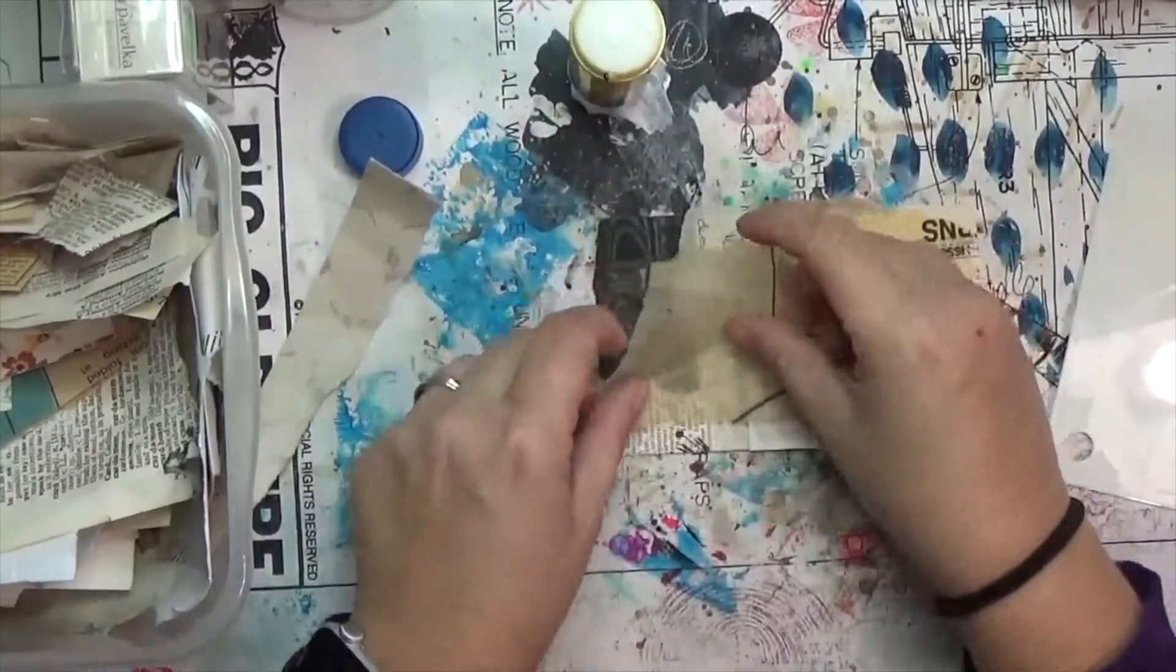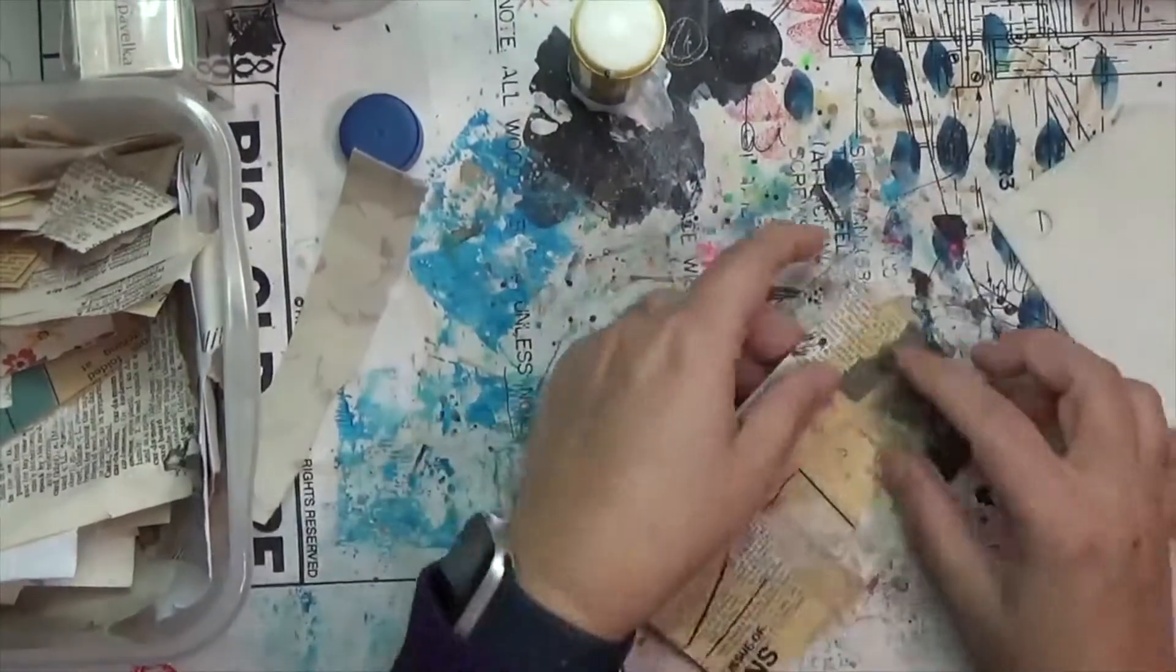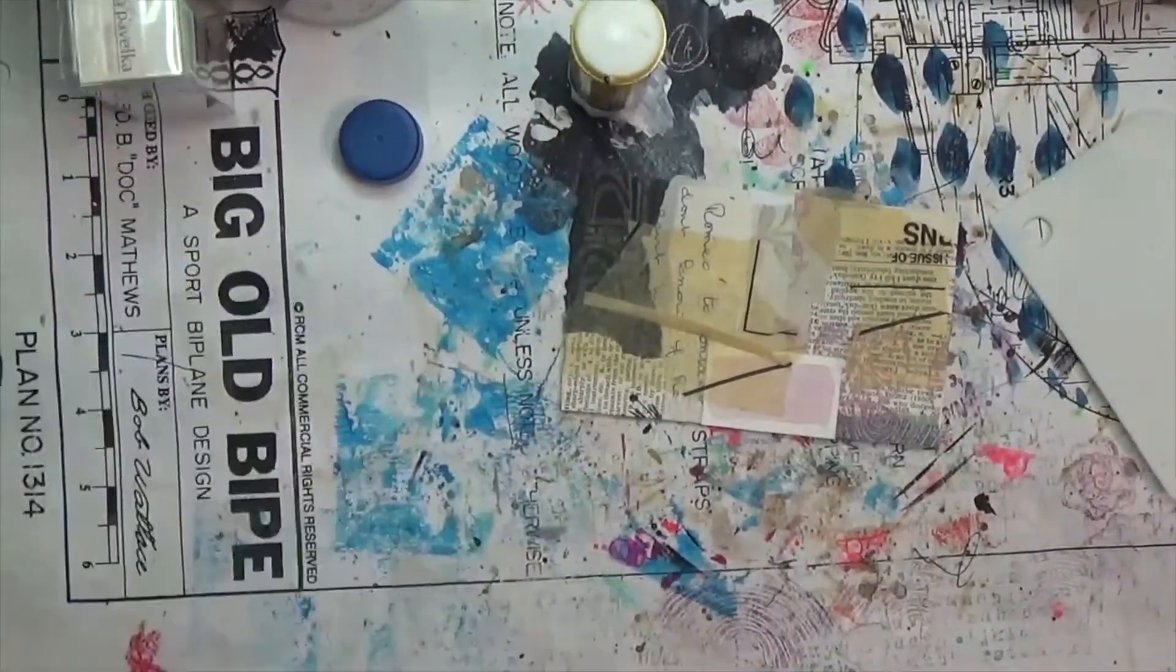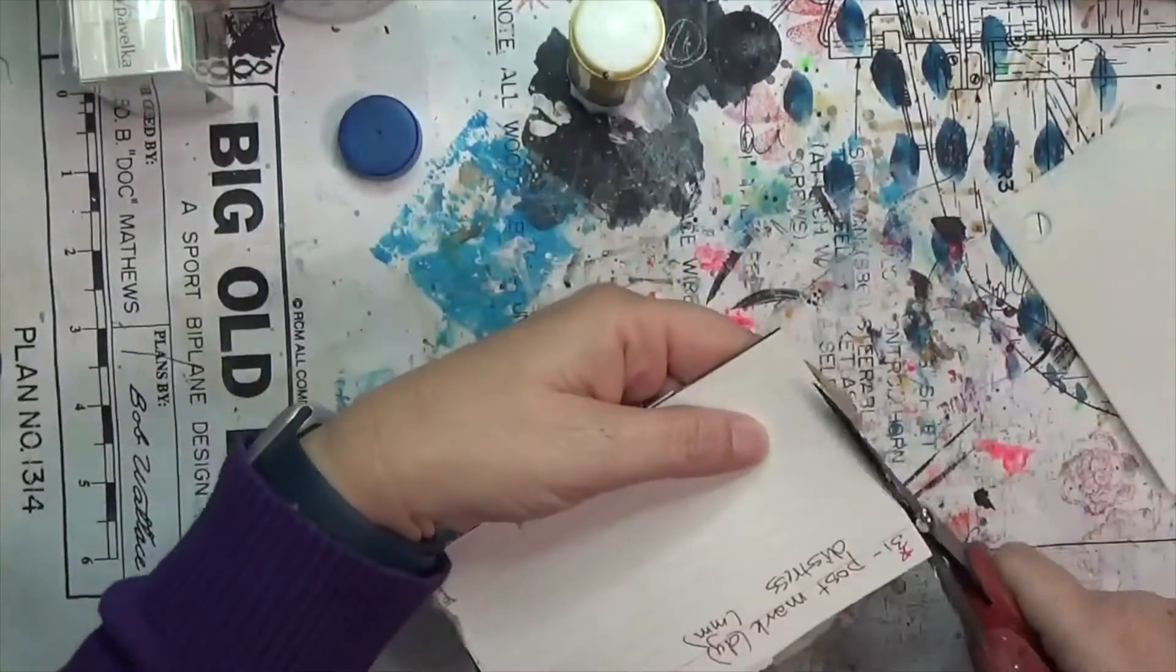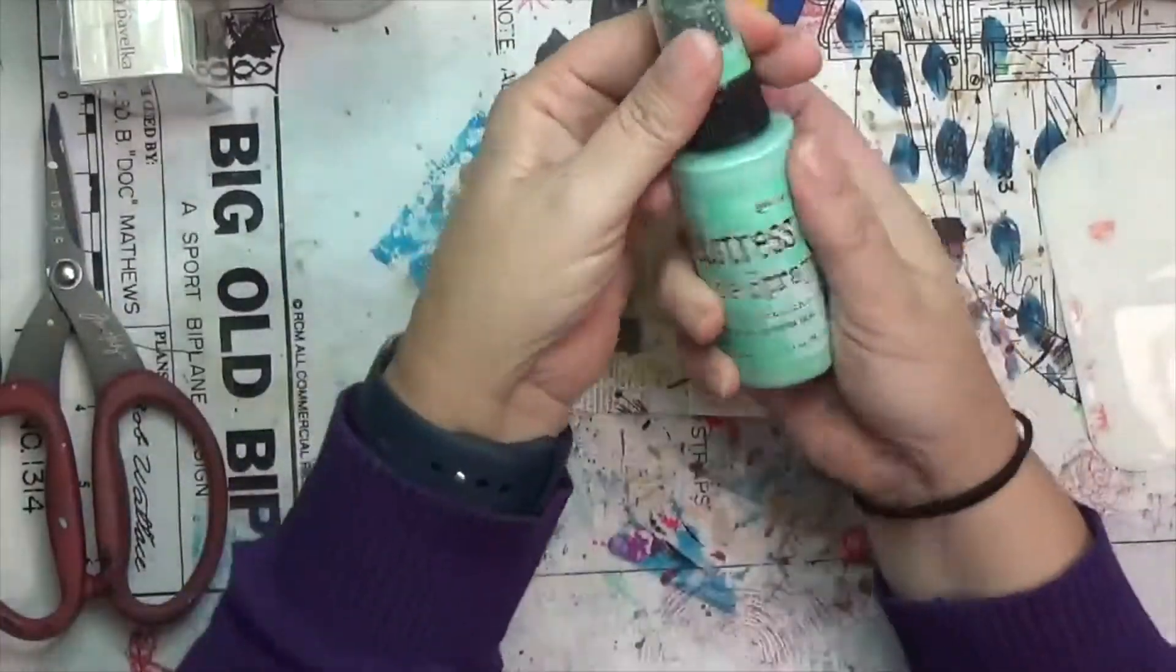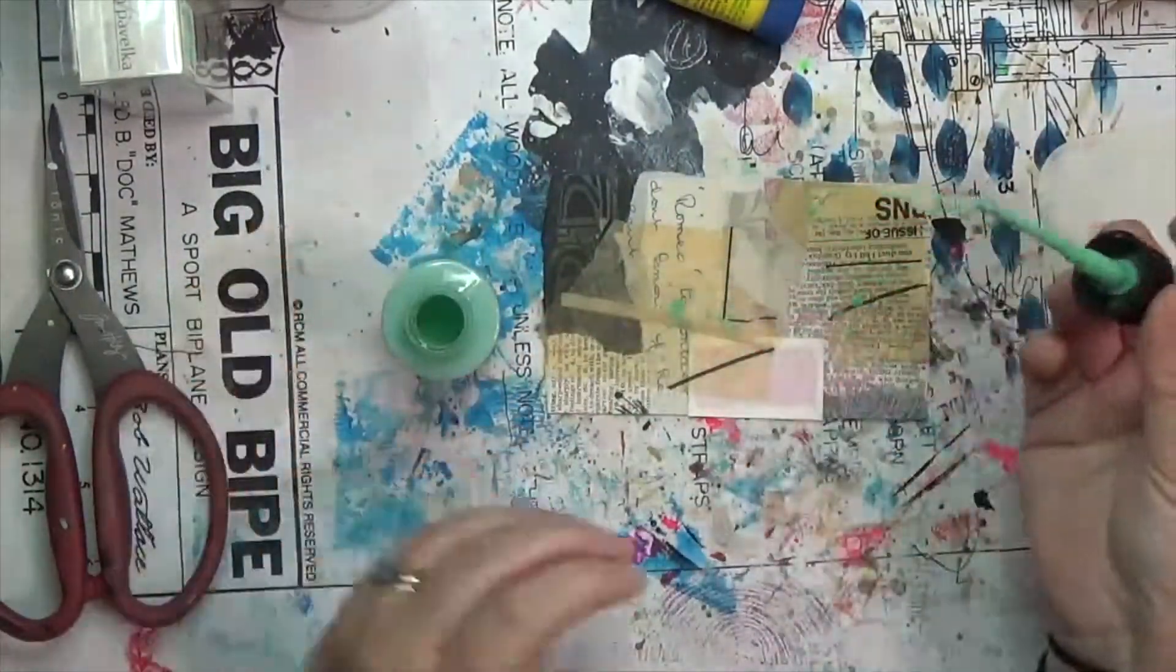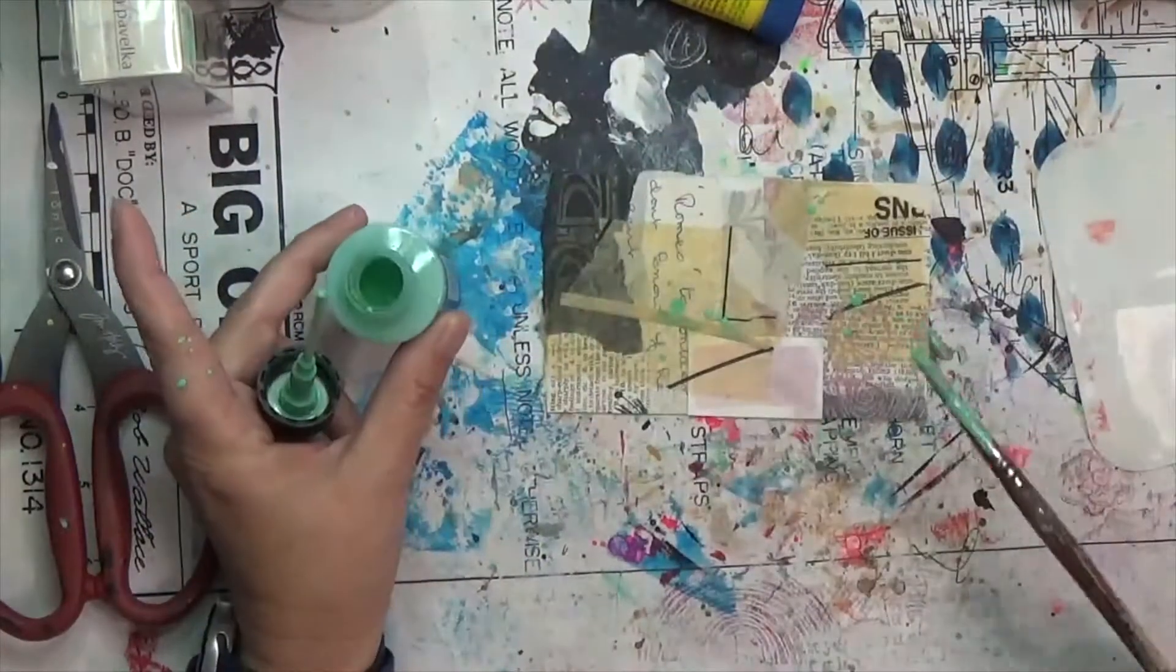Today's prompts: the Daisy Yellow prompt is postmark, and the mixed media iCAD prompt from Nina is distress. I knew I could use both of those, for one I've got a couple stamps that look like postmarks that you would find on an envelope that's been sent. And distress—pretty much all of the Tim Holtz products are distress products.